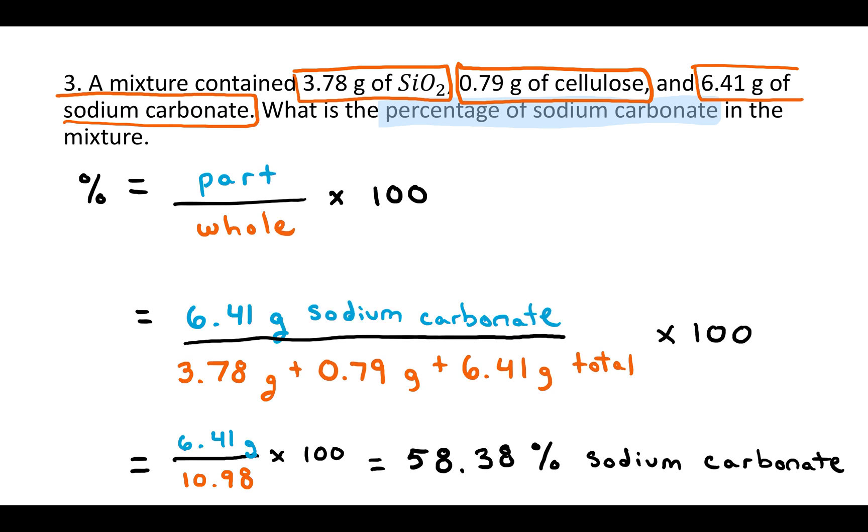So that would be 6.41 grams over 10.98 grams times 100, and that would give you 58.38% sodium carbonate. So around 58.38% of that mixture would be the baking soda, sodium carbonate.